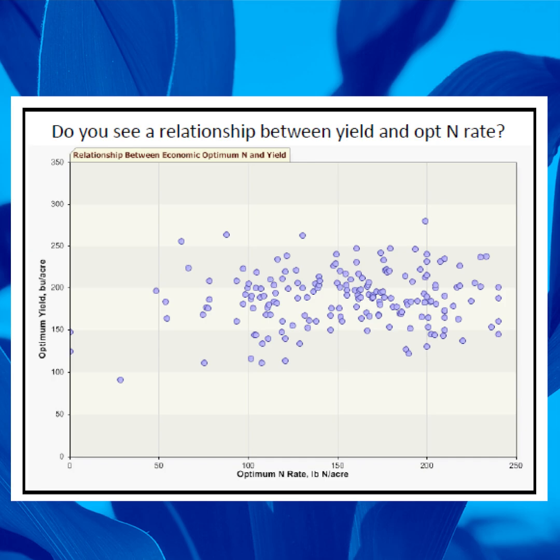So we should no longer be basing our N-rate recommendation based on expected yield potential. Instead, we should be using economics to do so. What's the price of the corn you expect to sell and what's the price of the nitrogen you expect to buy? You should use those two economic functions to decide how much nitrogen you're going to put on your corn.